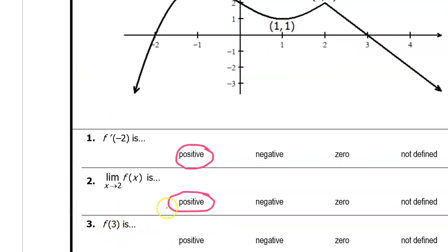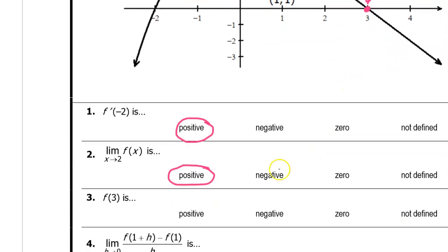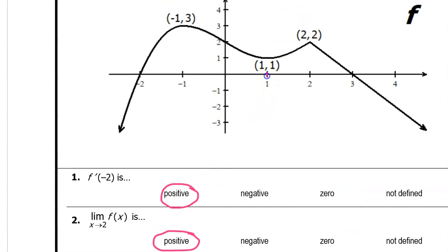Number three: f at three — here is the x value of three. The value of the function at three is zero; it's right on the x axis, so f at three is zero. Number four: when you see a strange expression like this one, you should interpret this as the derivative — the slope of the function at an x value of one. In other words, this whole expression is the same as f prime at one. Here is an x value of one. Looking for the slope, we see there is a horizontal tangent line right here, so the slope at one is zero.